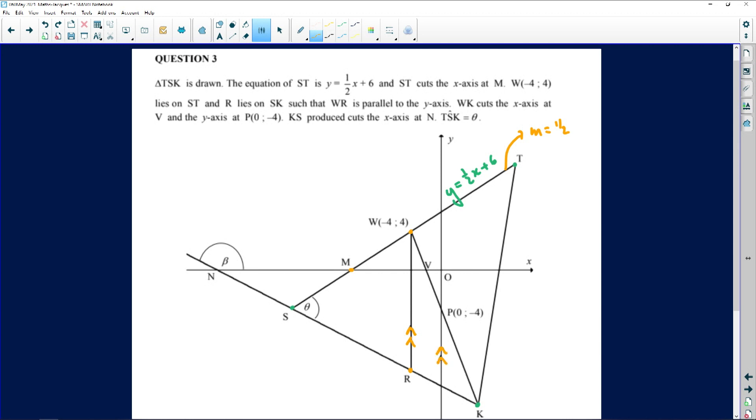R lies on SK such that WR is parallel to the y-axis. So immediately I'm going to say that angle is equal to this one if I need it, and this little angle here is equal to that angle over there because those are corresponding angles, and it's also equal to this angle over here because of either alternate or vertically opposite angles. WK cuts the x-axis at V, so the axis is cut in three places. WK cuts at V and the y-axis at P, so they've given us the y-intercept as P(0, 4). KS produced cuts the x-axis at N and angle TSK is theta.